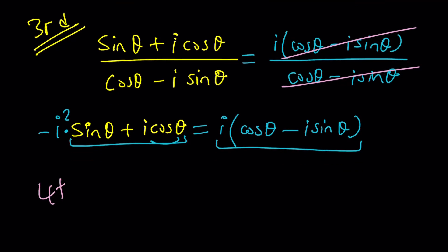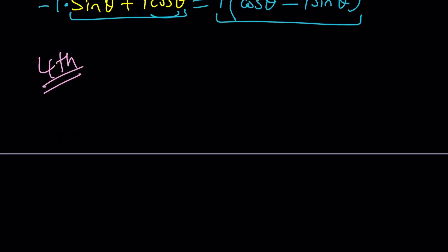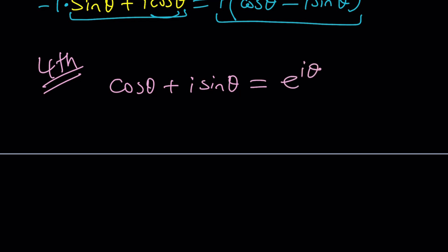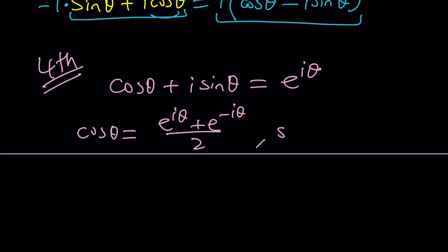The fourth method — ready? For my fourth method I want to use Euler's formula. As you know, e to the i theta equals cosine theta plus i sine theta, and changing theta to negative theta gives e to the negative i theta. That gives us two formulas: cosine theta equals e to the i theta plus e to the negative i theta divided by two, and sine theta equals e to the i theta minus e to the negative i theta divided by two i. Be careful — there's an i in the denominator and a minus sign in the numerator.